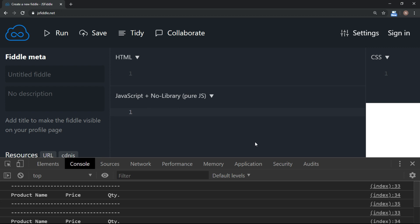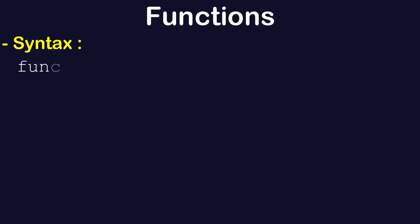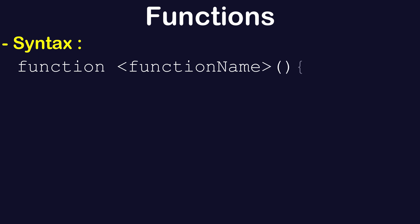In JavaScript, when you define a function, the syntax looks like this: you write the function keyword at the beginning, then you give the name of the function, you open and close parentheses, and you have the block of code inside curly brackets. This is the simplest syntax of a function.